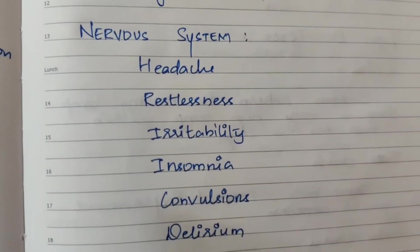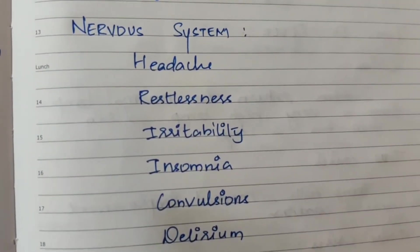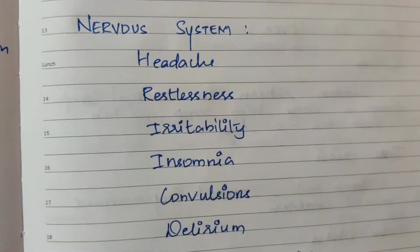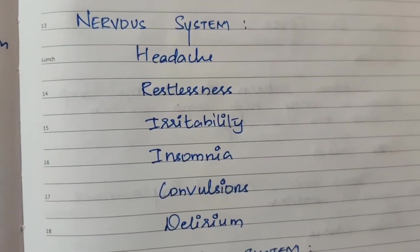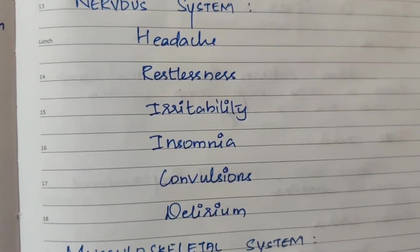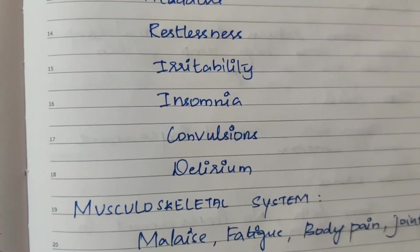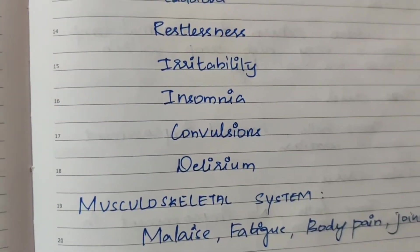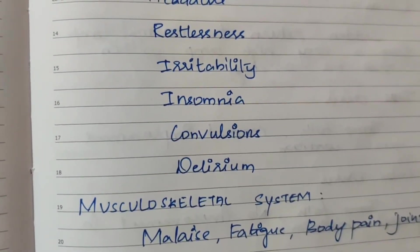In the nervous system: nervous disturbance, headache, restlessness, irritability, insomnia, and convulsions may occur.